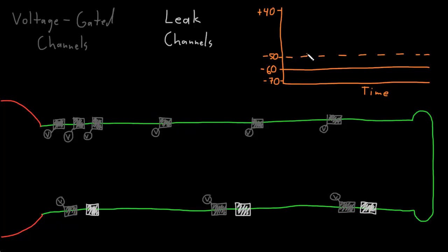We've talked about the threshold potential before, and all of these numbers may vary between different types of neurons, but these are fairly common values. Many neurons have a resting membrane potential of around negative 60 millivolts, and a threshold potential of around negative 50 millivolts, drawn here with the dashed line. The importance of this threshold potential is that it determines whether these voltage-gated ion channels will open.